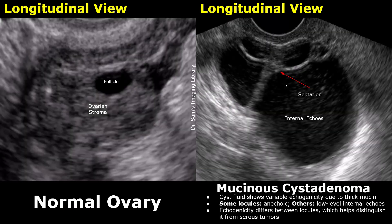Let's look at another case of a mucinous cystadenoma. In this image, we can see 5 locules and we can also see internal echoes within the mass. In a serous cystadenoma, we will not see internal echoes in the mass. This haziness will not be seen in a serous cystadenoma — they will appear completely anechoic.